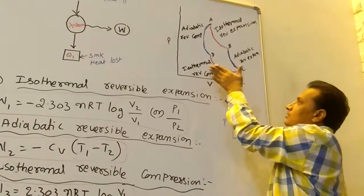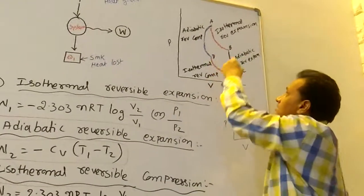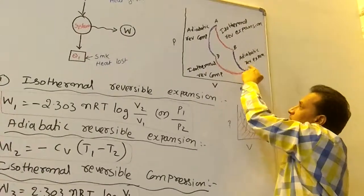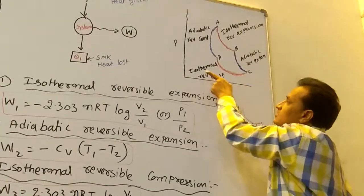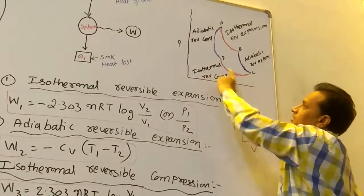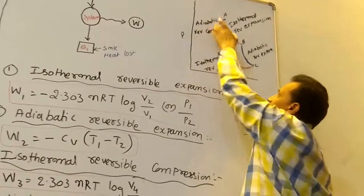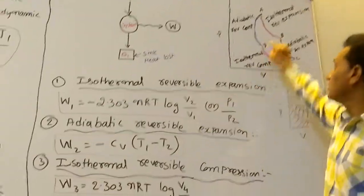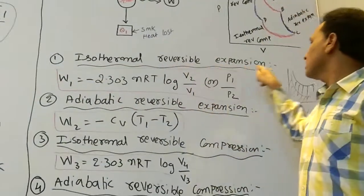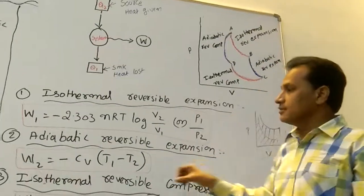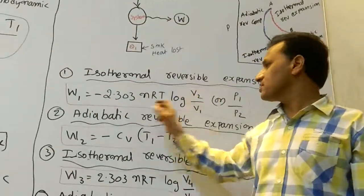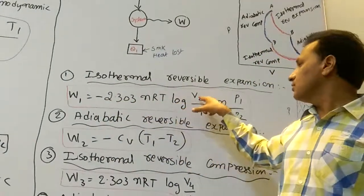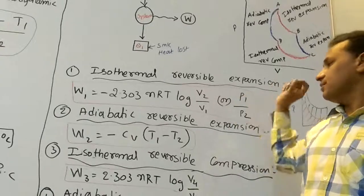The Carnot cycle takes place in 4 stages: isothermal reversible expansion, then adiabatic reversible expansion, then isothermal reversible compression, and finally adiabatic reversible compression. The work for isothermal reversible expansion is W1 = minus 2.303 nRT log(V2/V1) or log(P1/P2).